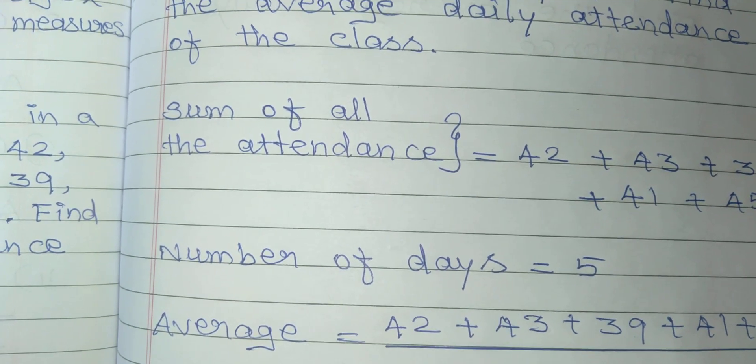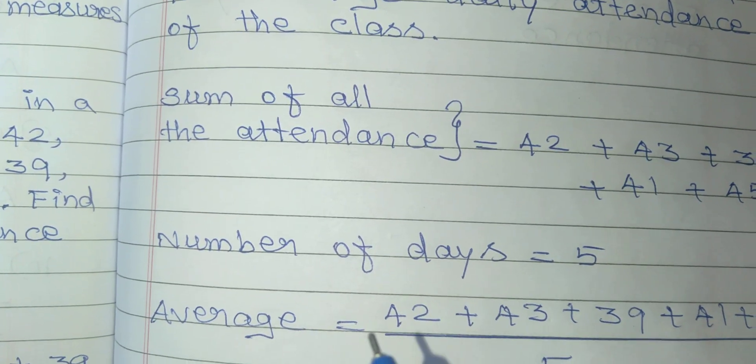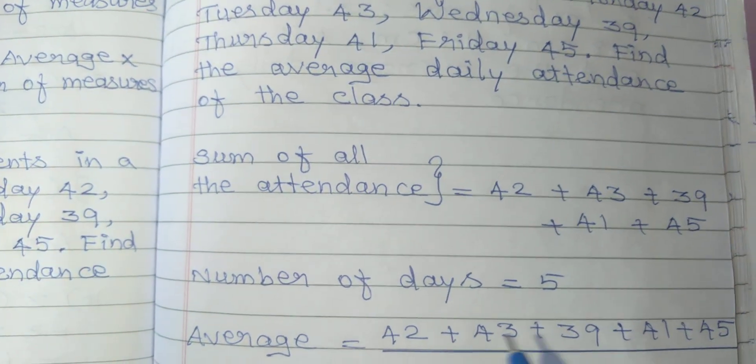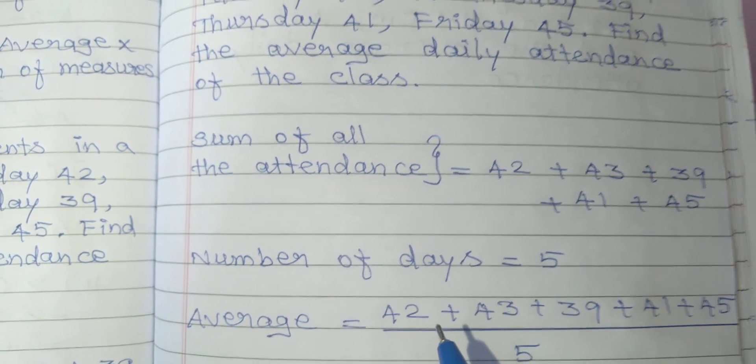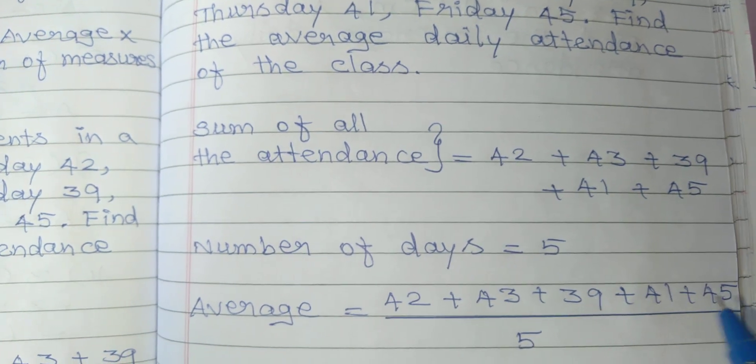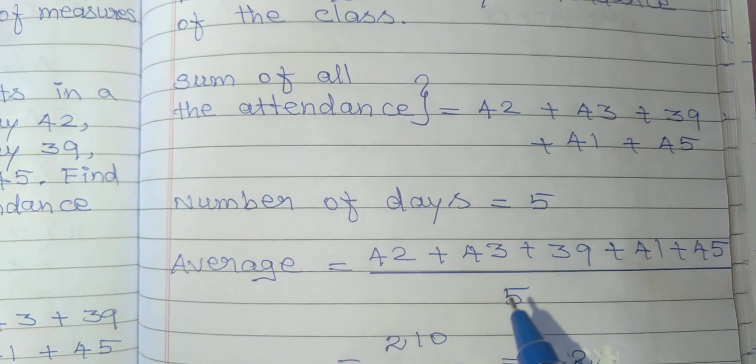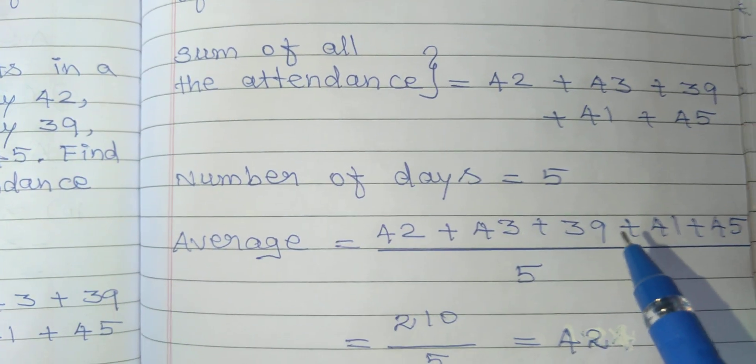Now we have to find the average. Average equals the sum of all the attendance divided by the number of days. So that's 42 plus 43 plus 39 plus 41 plus 45, divided by 5. Now we add all the attendance.